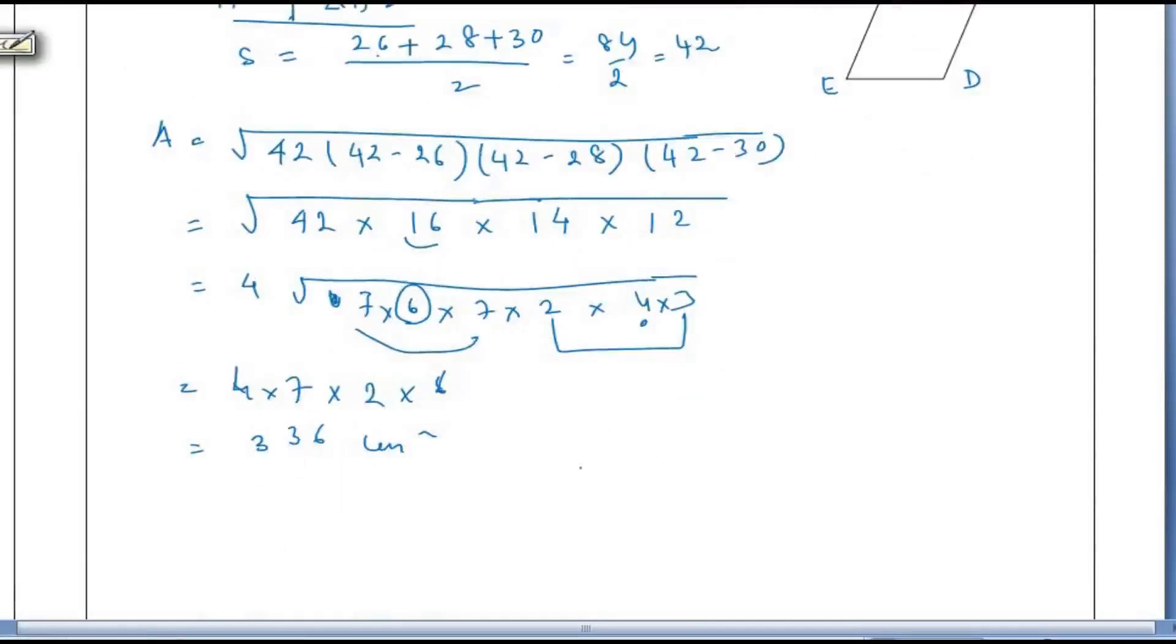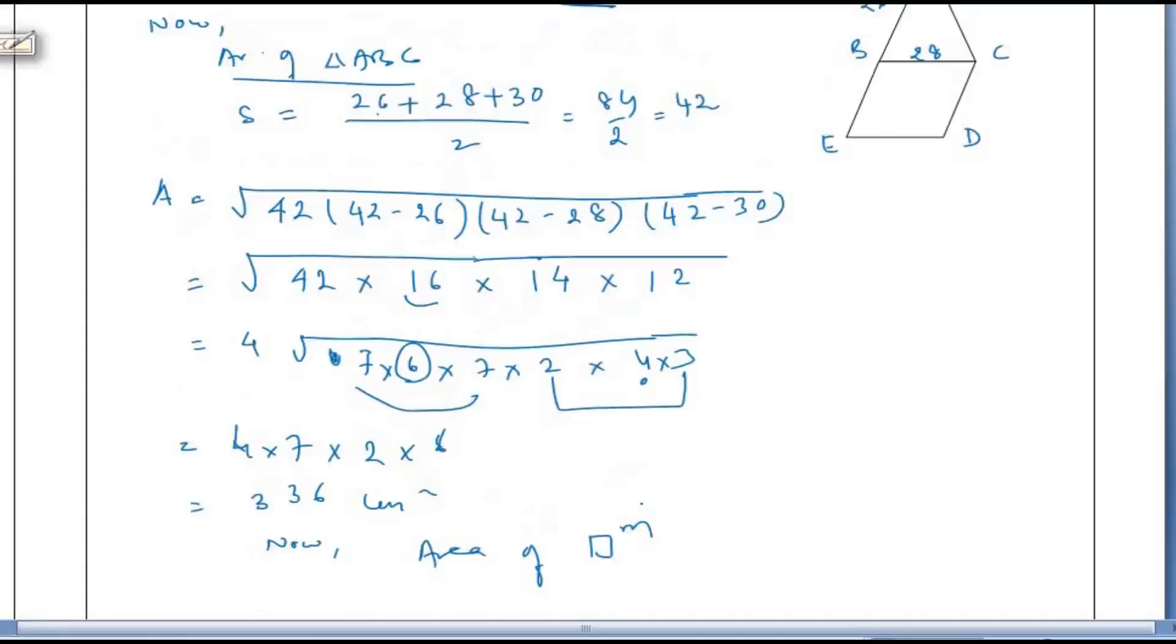Now, area of parallelogram BCDE is equal to 336. The formula is base into height or altitude, is equal to 336.